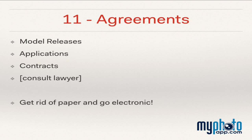Method 11: Agreements. With the forms feature of My Photo App and the ability to capture signatures, you can develop agreements and contracts. For example, a model release app is pretty common — you always have the app on your phone and before you start shooting, whip it out and have them sign it. Think about all the ways you use paper in your business and see how many ways you can go green and switch to apps. Of course, always consult your lawyer for any legal advice for your location.